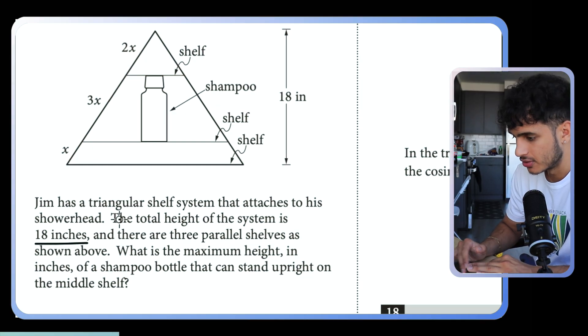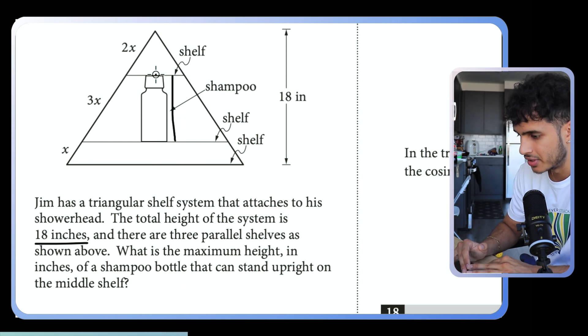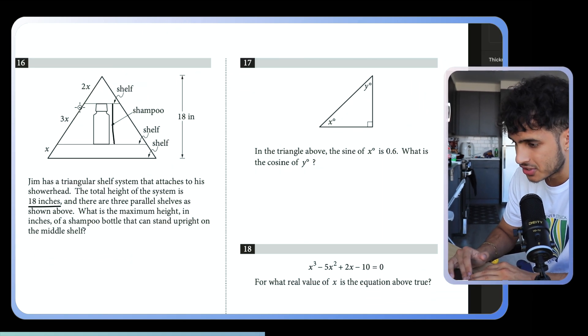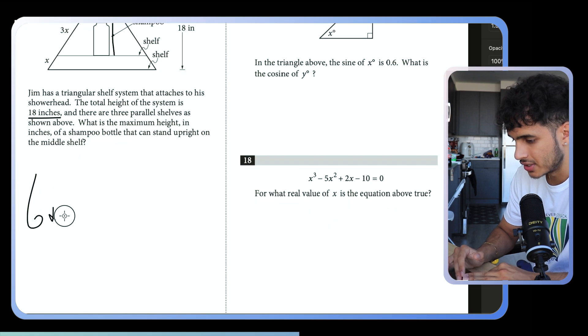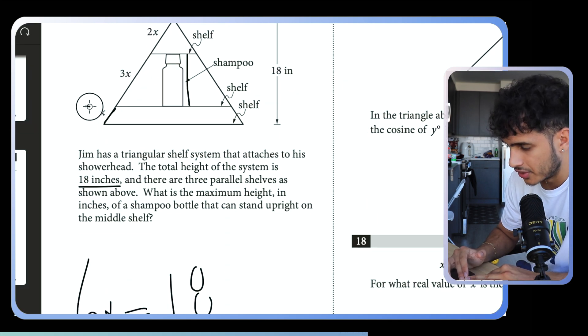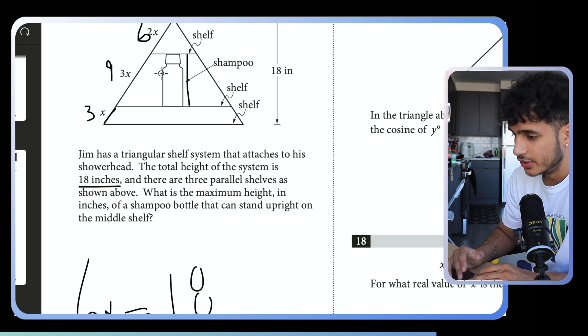Number 16 captures the use of similar triangles — a lot of students mess this up. This problem, while it may look hard, becomes super easy once you know exactly what to look for. The total height of the system is 18 inches, three parallel shelves, and we need the maximum height in inches a shampoo bottle can stand upright. For similar triangles you set up proportions. We add the segments together: 6x equals 18, which means x equals 3. So the height from shelf to shelf is 3, then 9, then 6. Once you plug in x equals 3, the answer is 9.